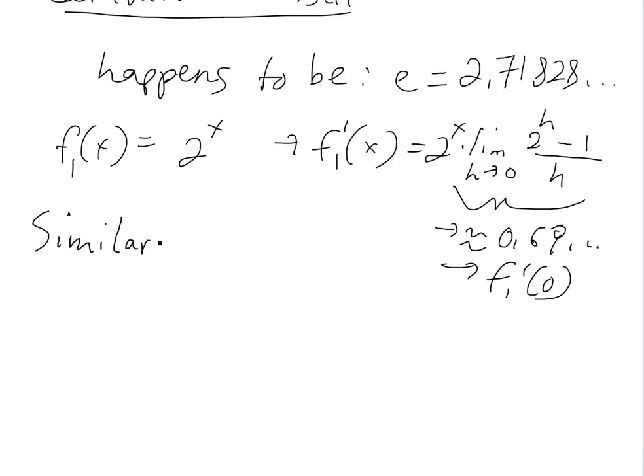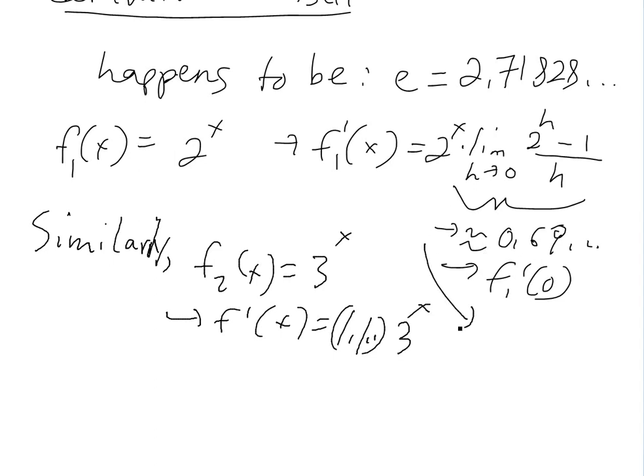And similarly, if you do the exact same thing for f2 of x equals 3 to the x, we'll get f prime of x equals 1.1 times 3 to the x. And in this case, that's f prime of zero. So f1 of x equals 0.69 times 2 to the x.